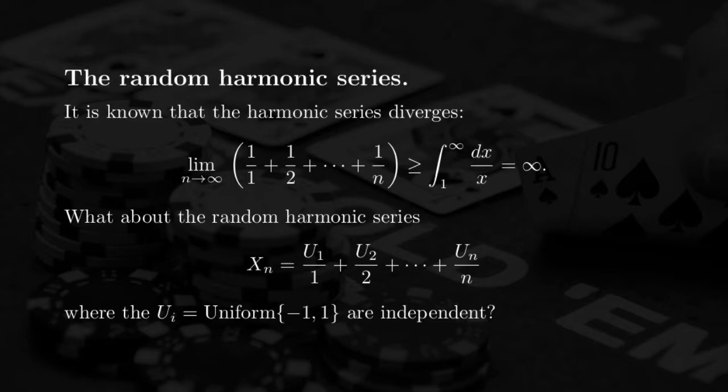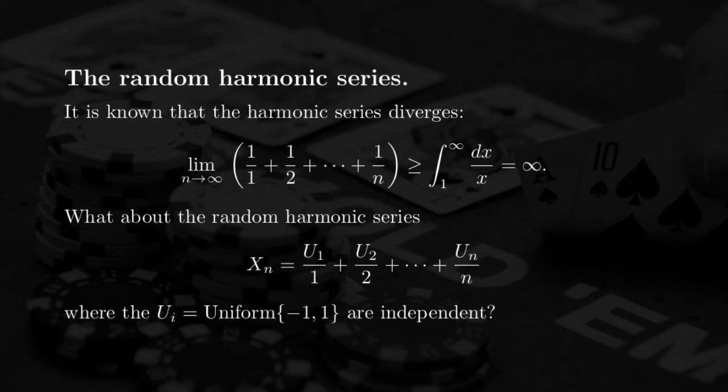A natural question is: what if we give a weight of +1 or −1 to each of the terms of this sequence? So you take 1, 1/2, 1/3 and so on, but instead of adding all the terms, you sometimes add and sometimes subtract, doing so uniformly at random — each sign chosen with probability 1/2. The question is: do we have convergence of this new sequence, which is random? This sequence is called the random harmonic series.